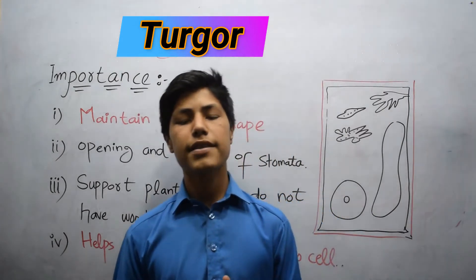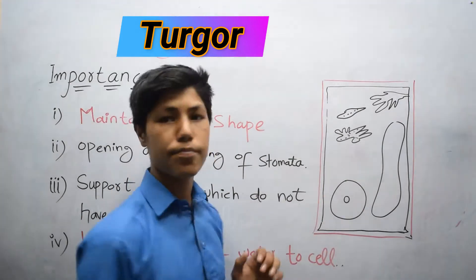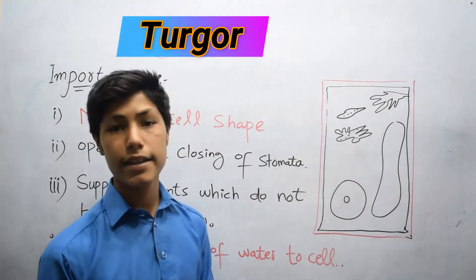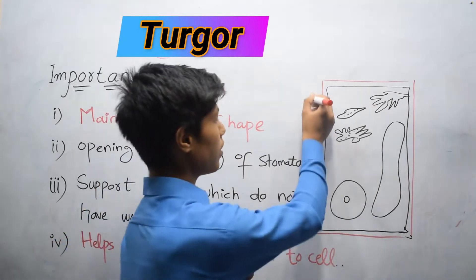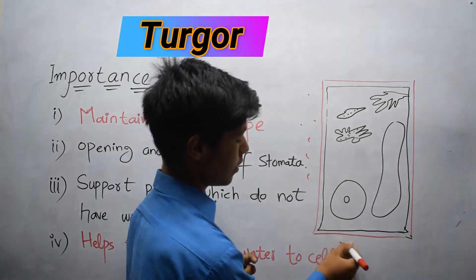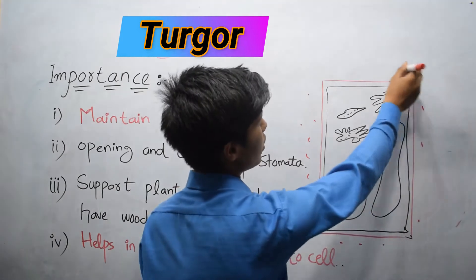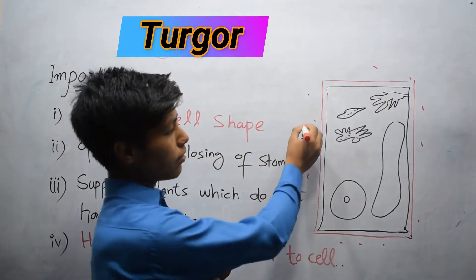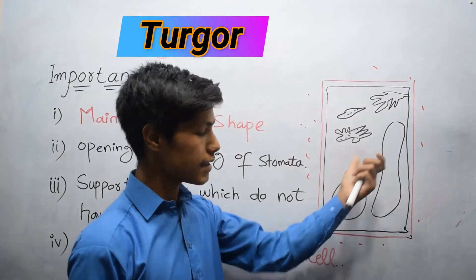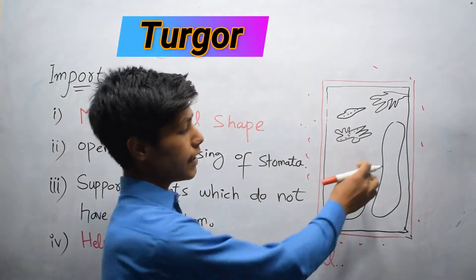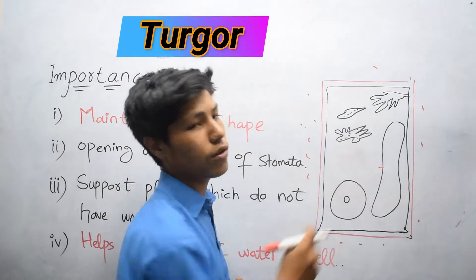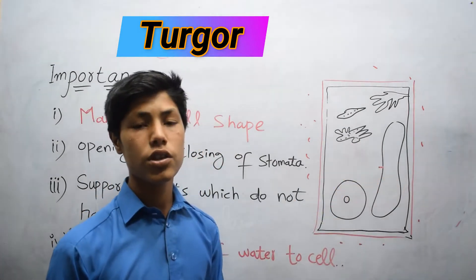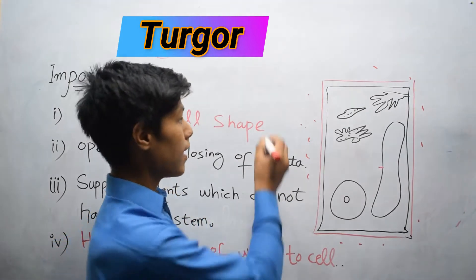For example, this is plant cell. Plant cell is surrounded by water. This is water, and outside there is water. The water moves toward the cell, mainly vacuole. This is vacuole. The water moves toward vacuole through the process of osmosis.